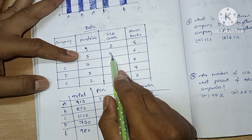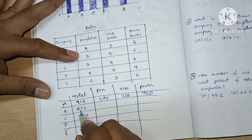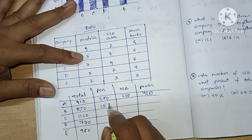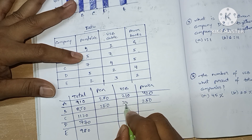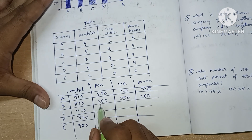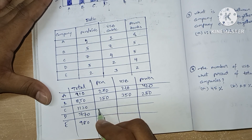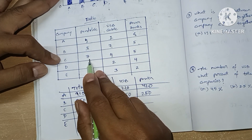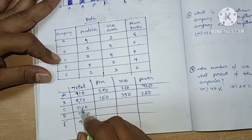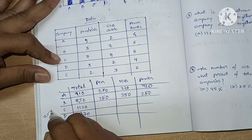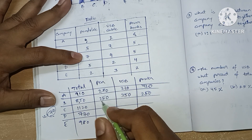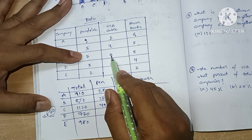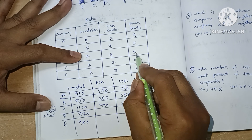For Company B, the ratio gives 10+7 = 17 parts, and the total is 850. So 17 parts = 850, meaning one part = 50. Therefore pen drives = 5×50 = 250, USB cables = 7×50 = 350. For Company C, 9+7 = 16 parts, total is 1120, so one part = 70. Pen drives = 7×70 = 490, USB cables = 4×70 = 280, power banks = 5×70 = 350.